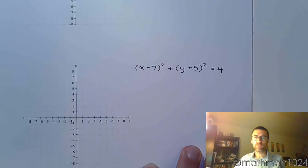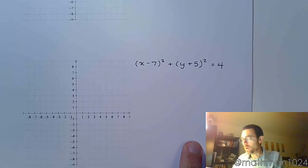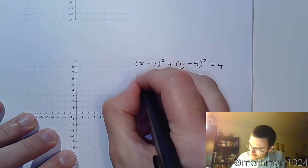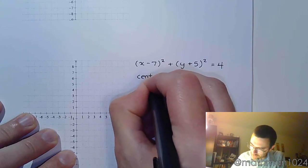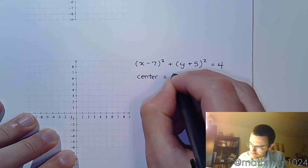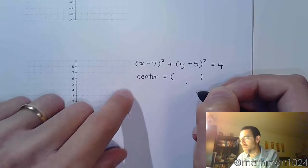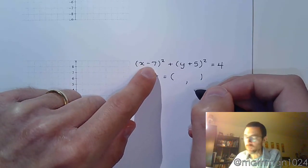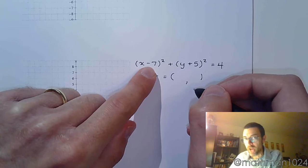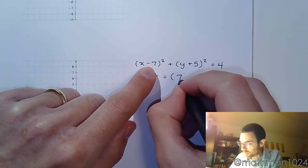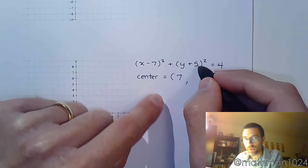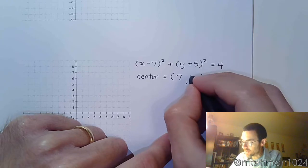x minus 7 quantity squared plus y plus 5 quantity squared equals 4. So let's identify the center. Remember that to identify the center, we look at the opposite of what we have here. So for the x-coordinate, the opposite of negative 7 is positive 7. For the y-coordinate, we do the opposite of positive 5, so that's negative 5.